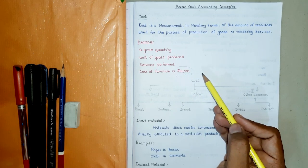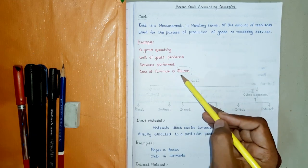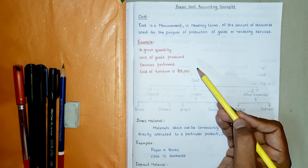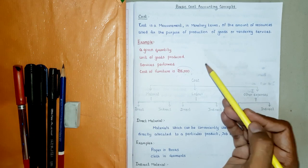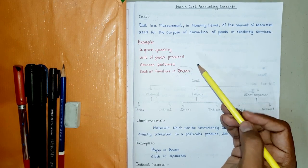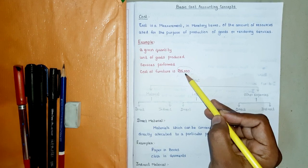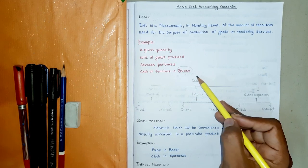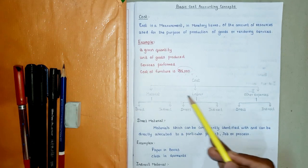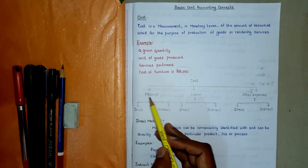One such example is cost of furniture is fifteen thousand, which means we have spent fifteen thousand in making the furniture. In other words, we spent fifteen thousand towards the cost of material, labor, and other expenses. Thus cost means an amount of expenditure on a given thing.